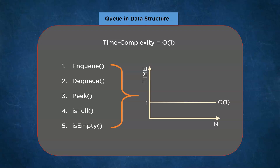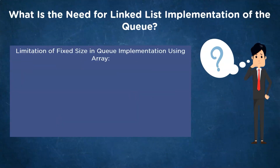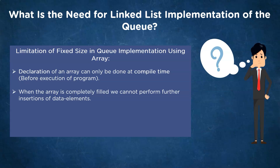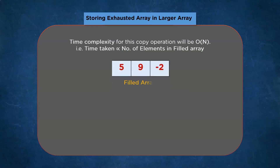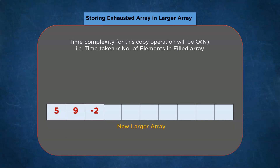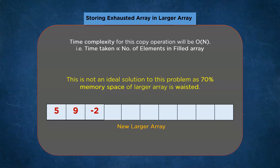Now let's understand the need for linked list implementation of queue. When we discuss the implementation of queue using arrays, we discuss the limitation of fixed size. An array always has a fixed size declared before compilation. Once all positions are exhausted, we either deny insertion by saying the queue is full, or we create a new larger array and copy elements from the previous array. The time complexity for this copy operation is O(N). Furthermore, giving a random larger size to the array leads to a possibility of massive memory loss — for example, 70% of the memory may be unused.